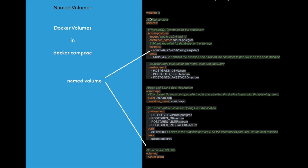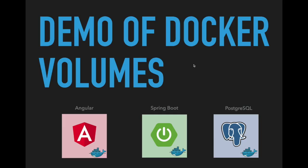In the case of Docker Compose, it works the same way but using a docker-compose file. Under the services section there is a volumes attribute where we mention the name of the Docker volume — which is 'scrum-data' here — and the path, which is the virtual file system path of the Docker container. We also have to mention the volumes attribute at the top level in line with services and give the name of the Docker volume. We are going to see how we can utilize Docker volumes for our stateful applications: an Angular front-end, a Spring Boot back-end, and a PostgreSQL database.